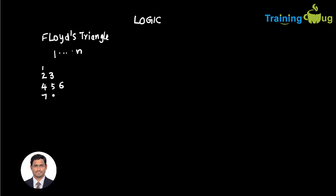And the fourth line is going to print 7, 8, 9, 10. And then in the fifth line it is going to print 11, 12, 13, 14, and 15, and so on.